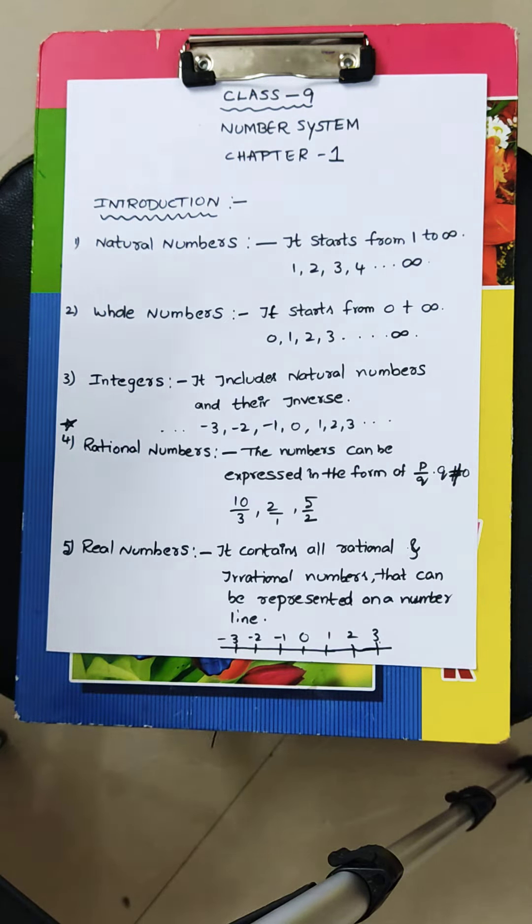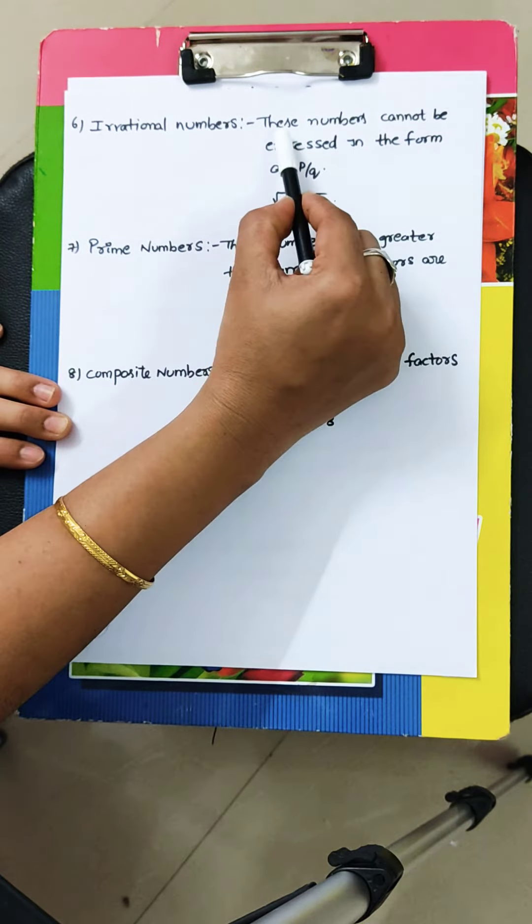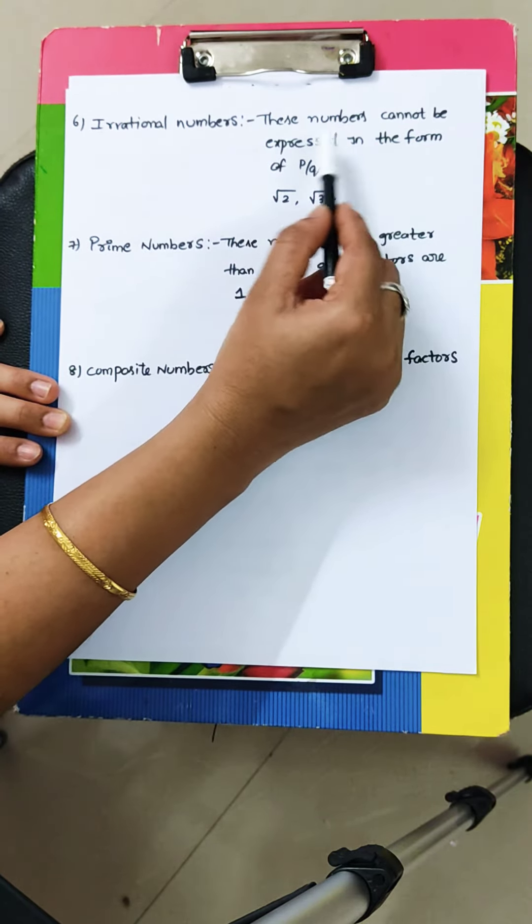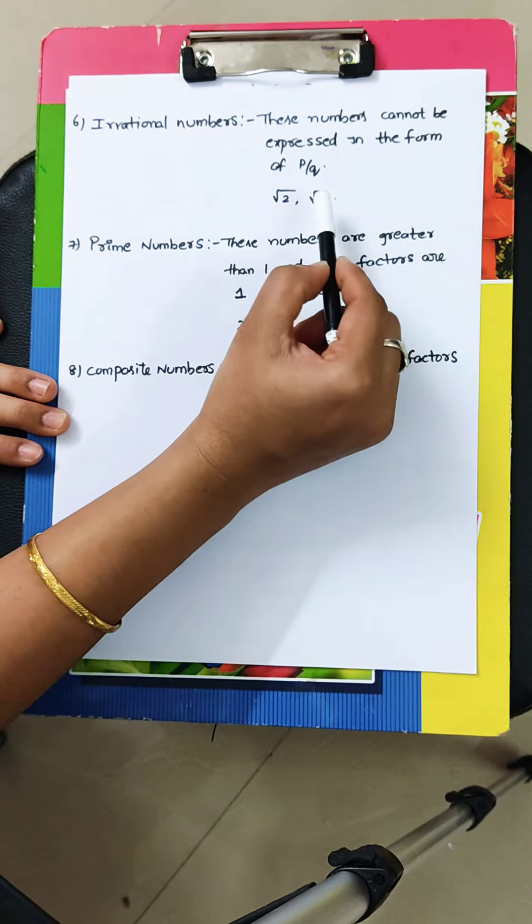Next, sixth one, irrational numbers. These numbers cannot be expressed in the form of P by Q. I mean root 2, root 3.